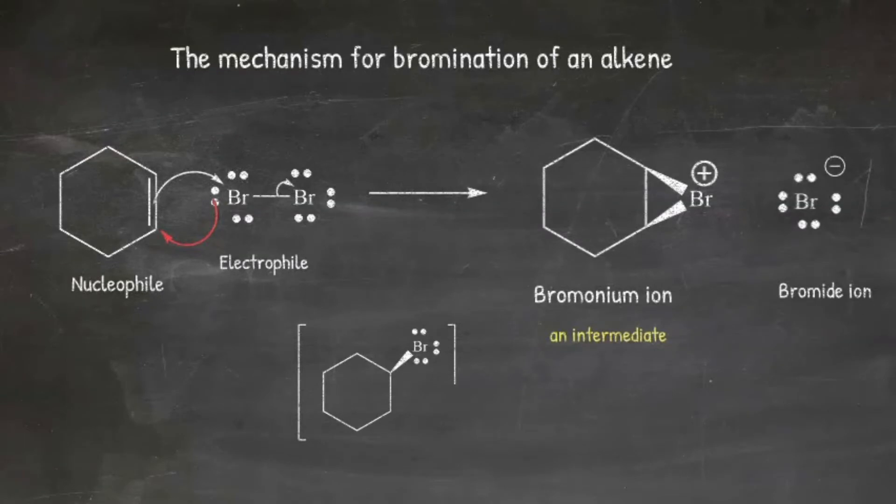The ring closure to the imaginary carbocation is fast. Because the Br atom is seen on the top of the cyclohexene carbocation, ring closure occurs from the top to produce the bromonium ion.